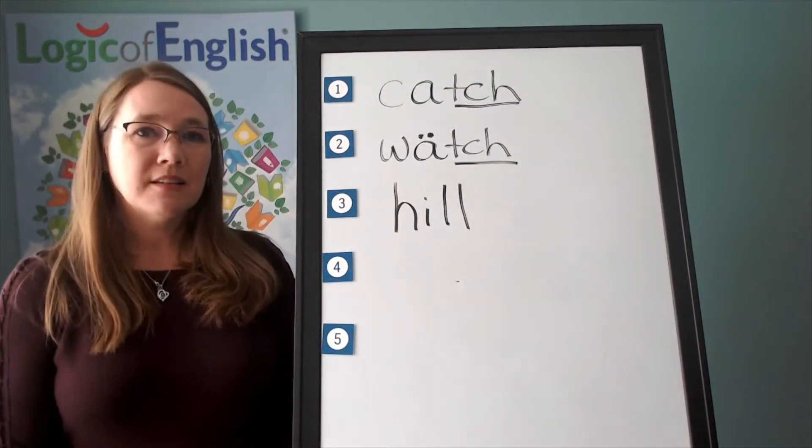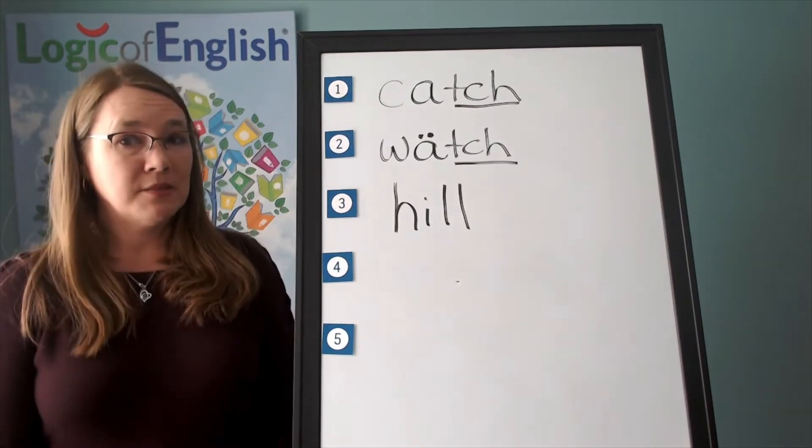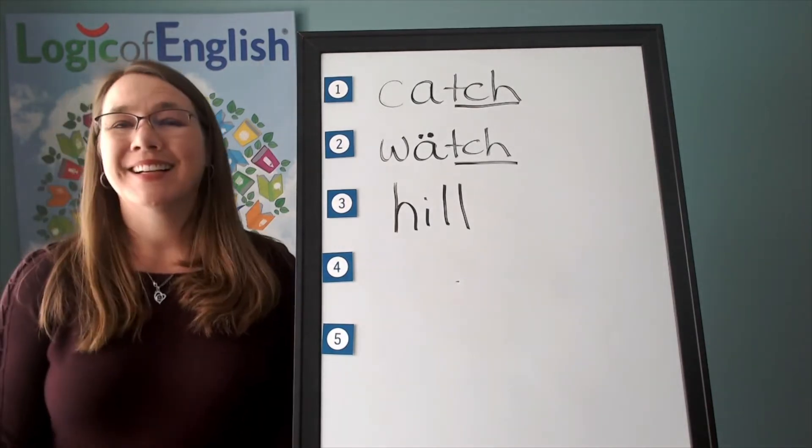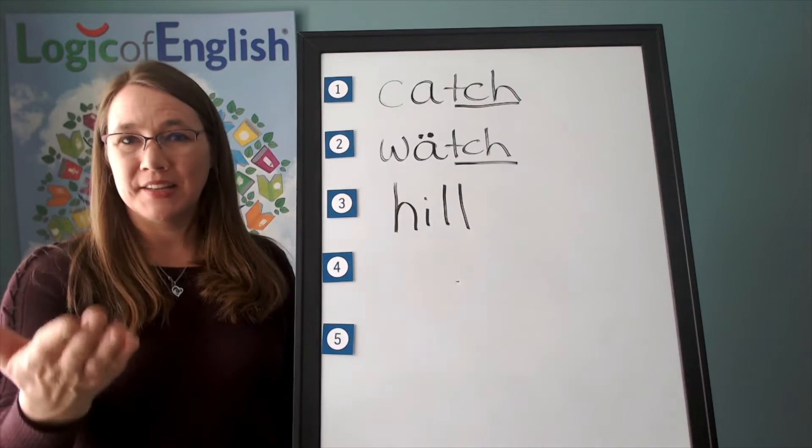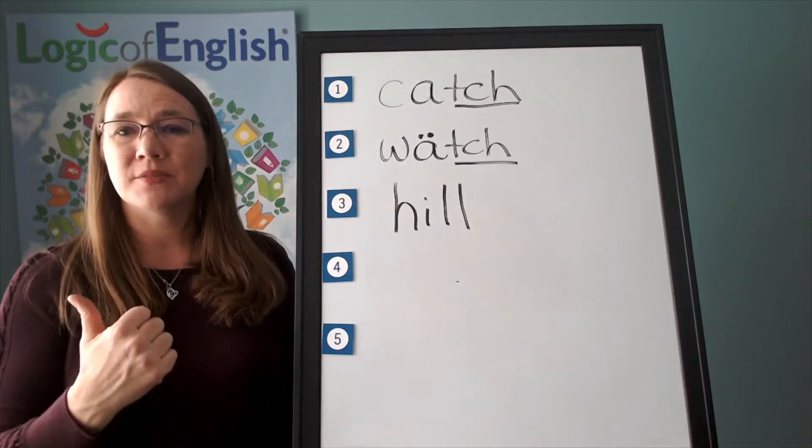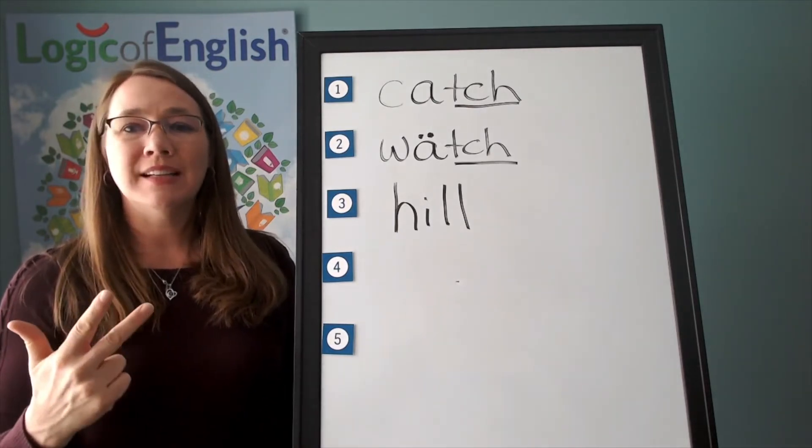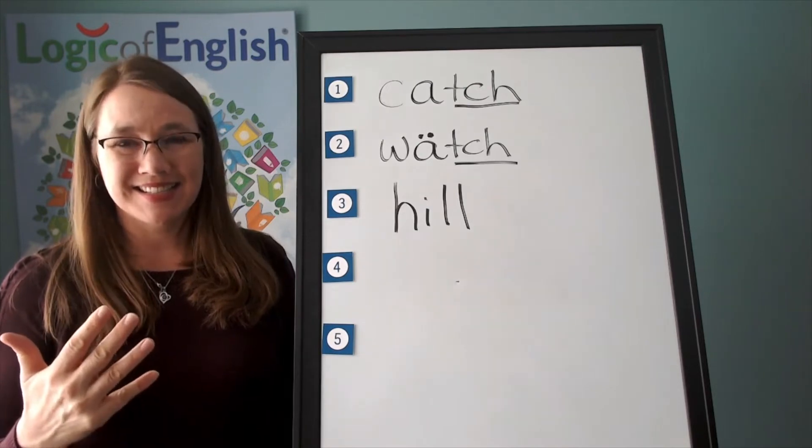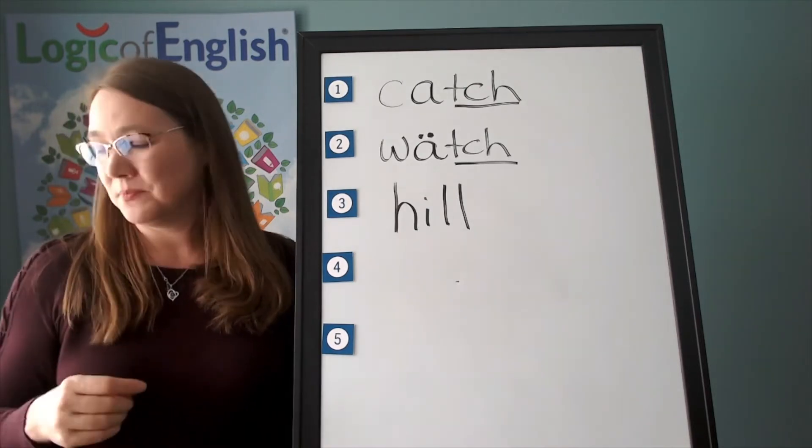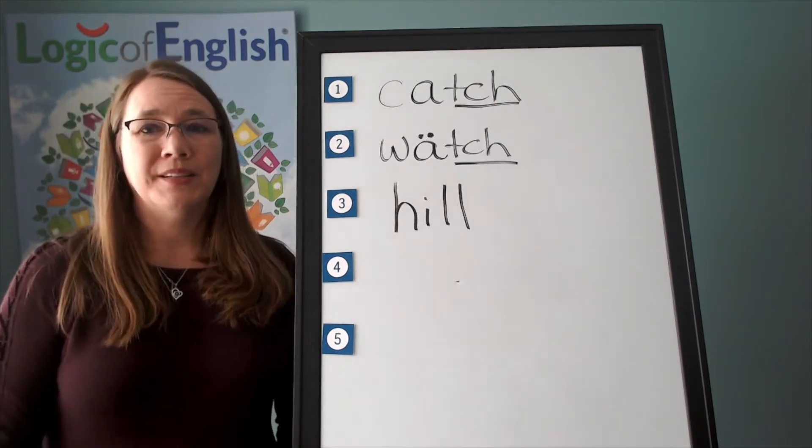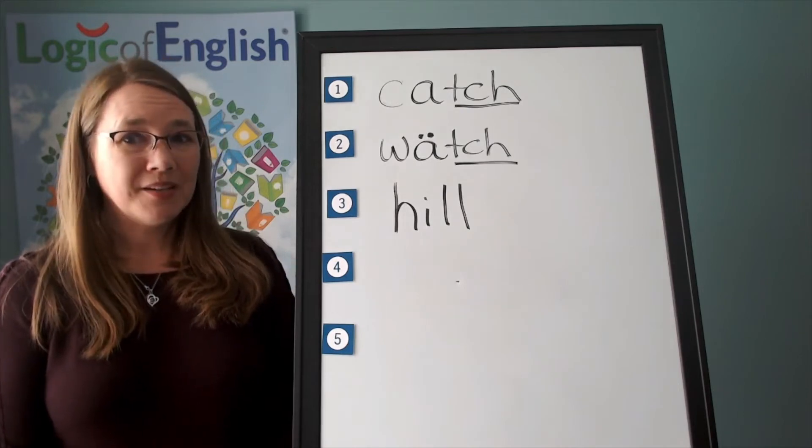The next word is glass. The window is made out of glass. Glass. Go ahead and say glass. Glass. Let's sound it out. G, l, a, s, s. Glass. Good. Go ahead and write it.